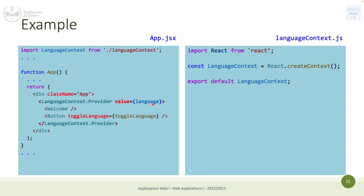The value you assign to this provider — the current value you send — is 'language', which is a state. So when you press toggle language, this provider changes the value to either Italian or English, and will re-trigger the rendering of all consumers of these values.